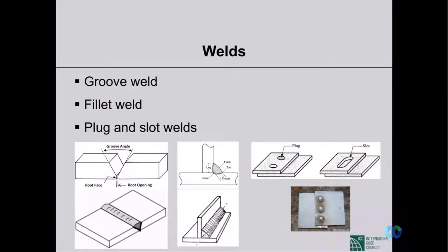Yesterday we talked about the classification of connections — simple, fully restrained, and partially restrained connections. Today we'll talk more about how we connect different members. Basically there are two ways: welding and bolting. Let's start with welding.